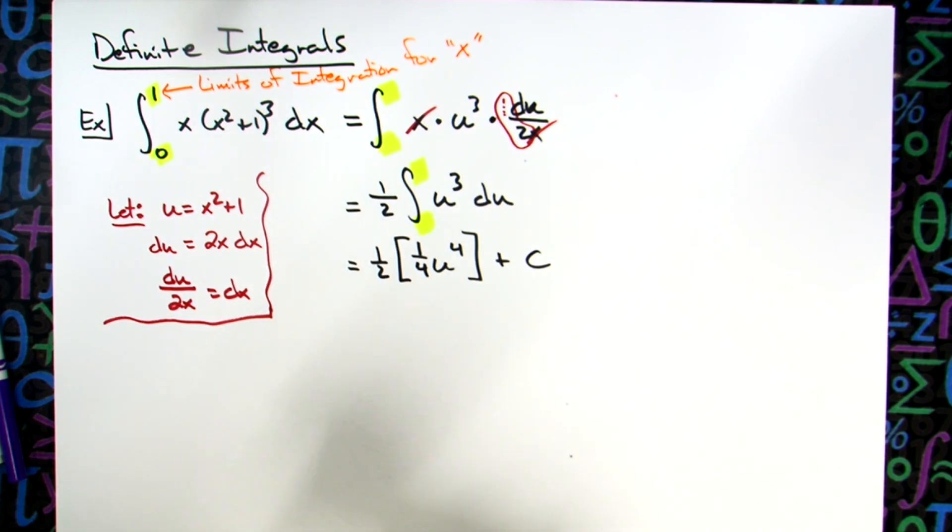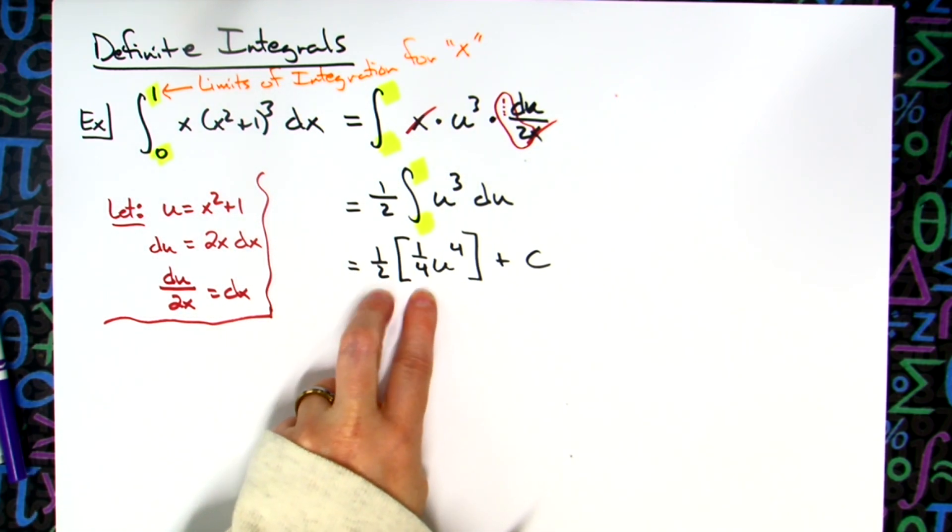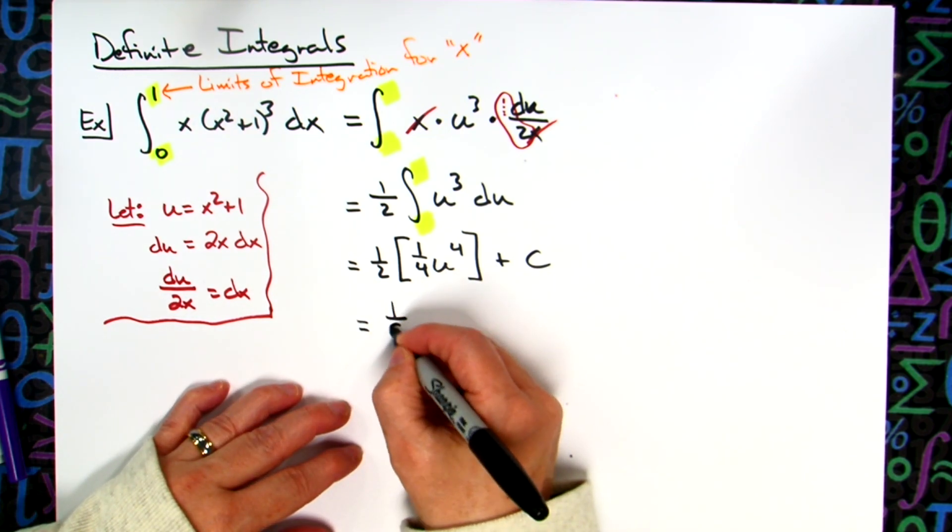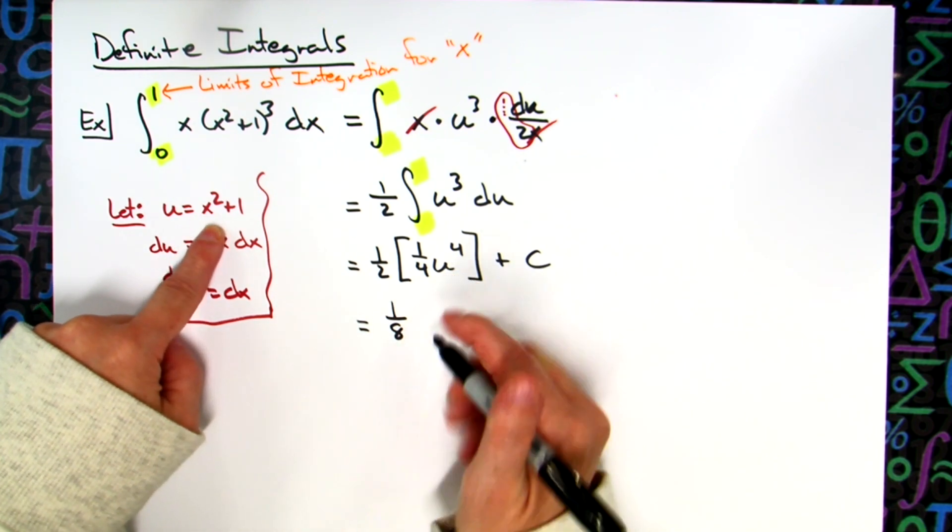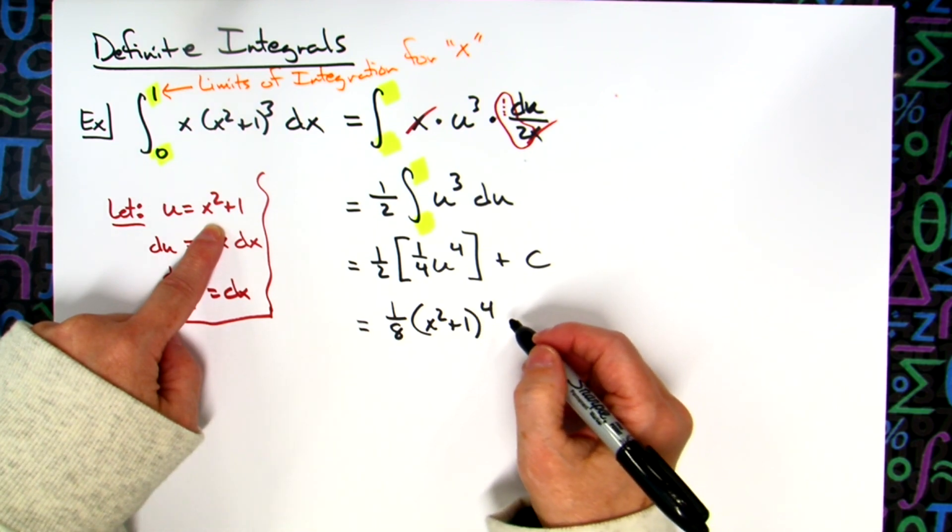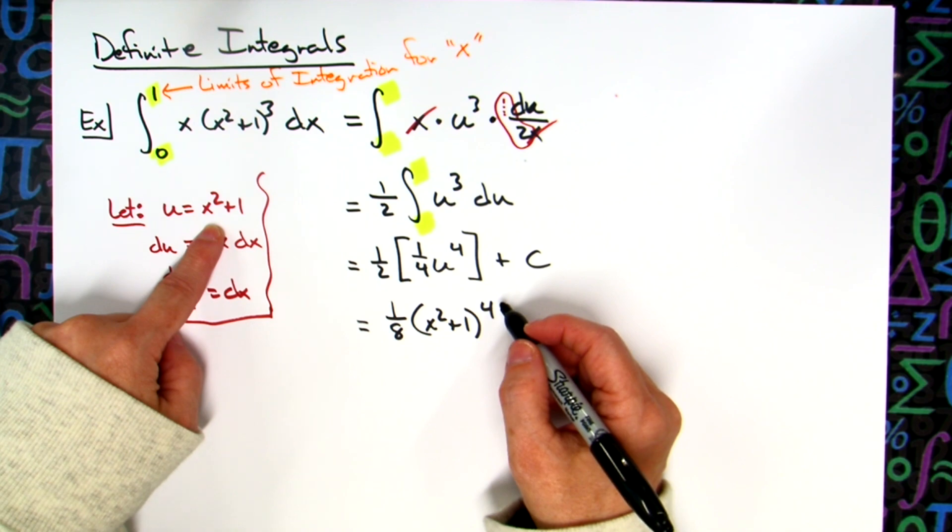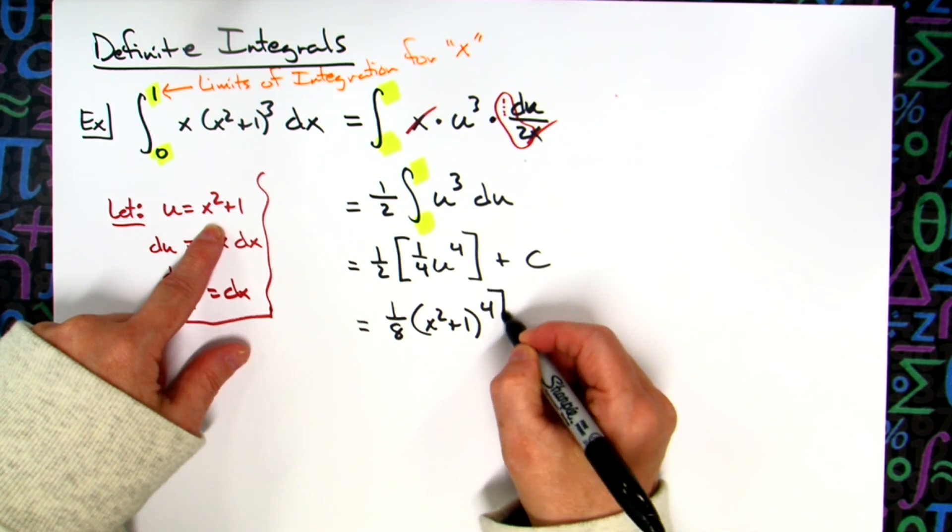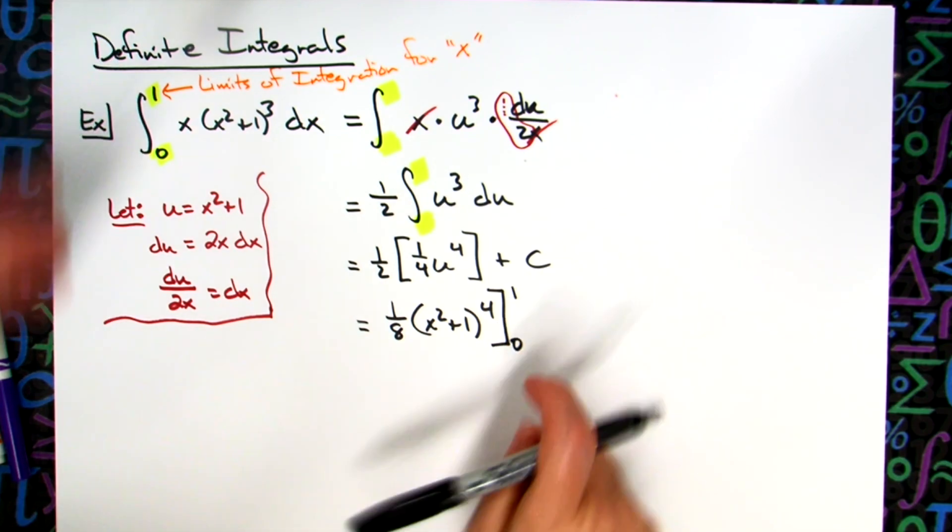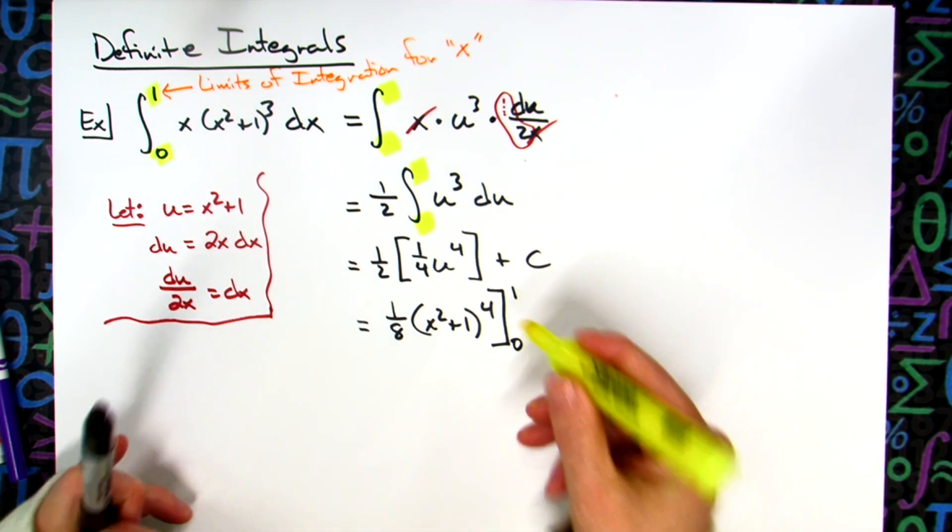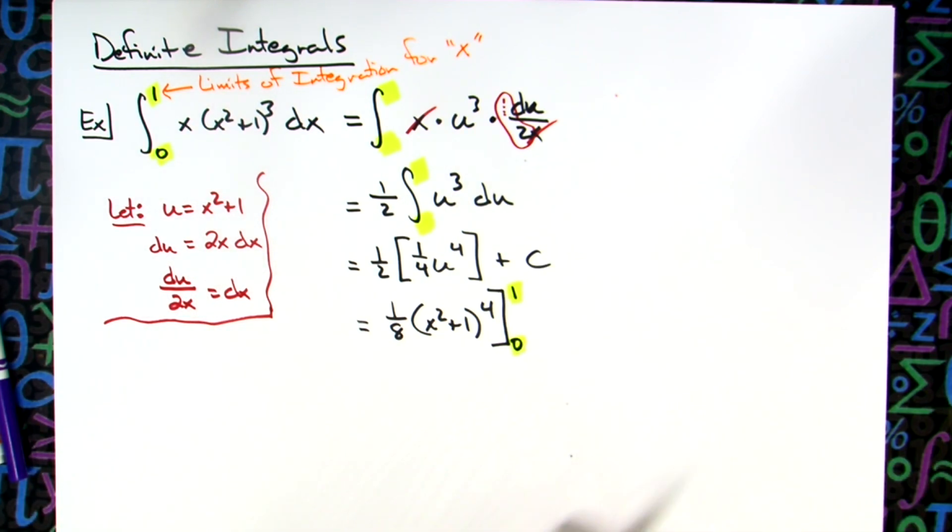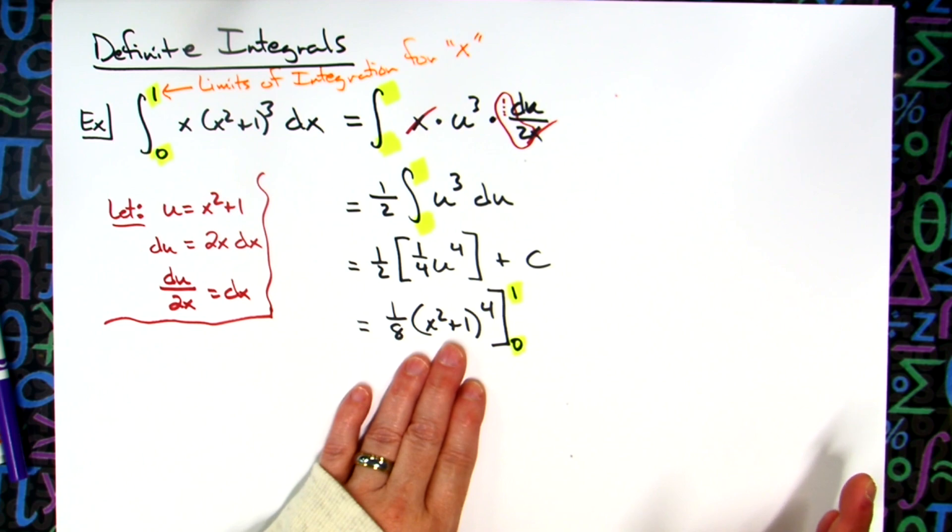Now when I go back in terms of x, I am going to clean it up a little bit. I'm going to take that one half and that one fourth and multiply it. So I'm going to multiply one eighth and then substitute my u back in. So x squared plus one to the fourth power. Now, am I all in terms of x? So can I now evaluate based on my limits of integration for x? So I can legally now put back in the zero and the one, because those are limits of integration for x and I'm finally back in to a form that is just x.